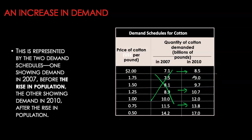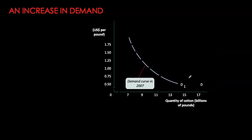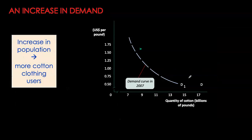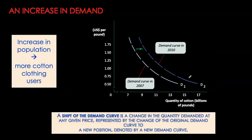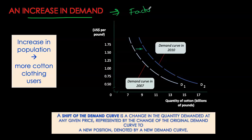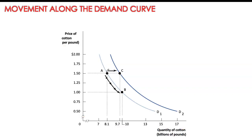For all of these prices, the corresponding quantity demanded is now higher than before. So we are working with a new set of coordinate points, and once I plot these I have a new demand curve. Whenever we have an increase in demand, quantity demanded rises at any given price, primarily because of factors other than price — in our example, the factor was higher population.